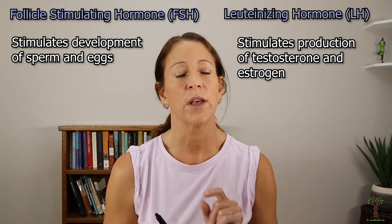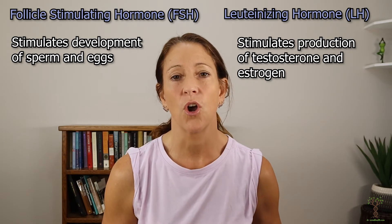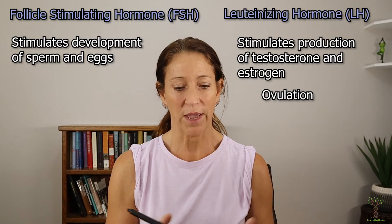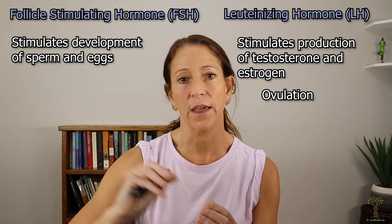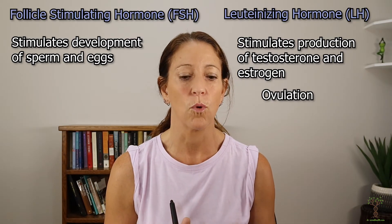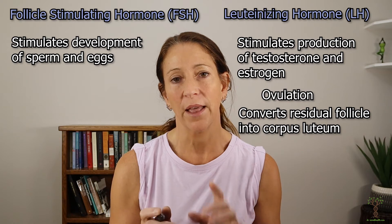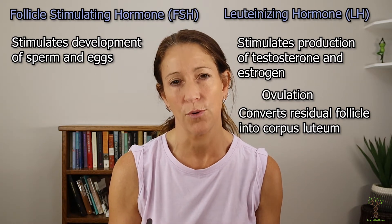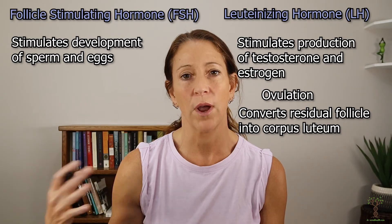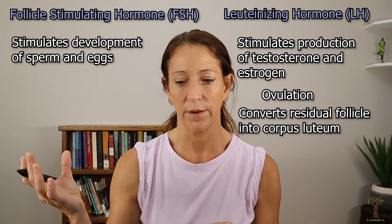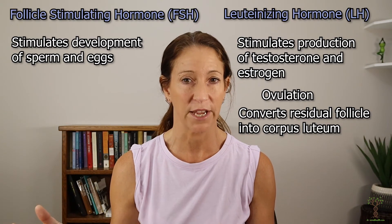Luteinizing hormone also stimulates ovulation. When we have an LH surge around day 14 of the female cycle, that stimulates the egg to be released. LH also stimulates the empty follicle after ovulation to become the corpus luteum, which produces progesterone. Progesterone is important for uterine lining buildup so the uterus is ready for possible implantation.